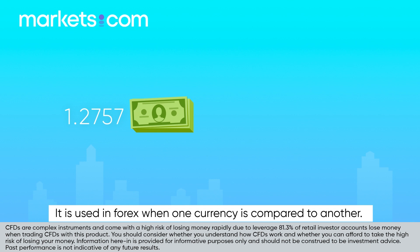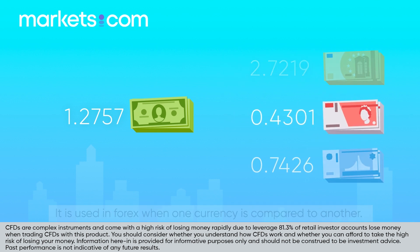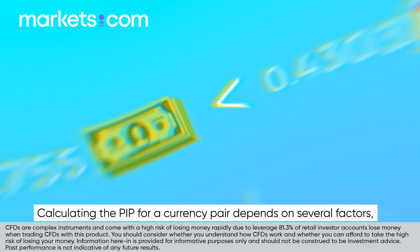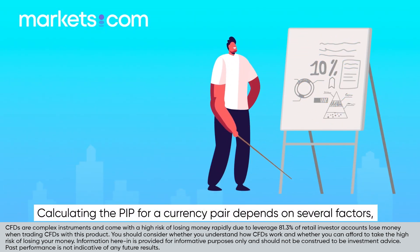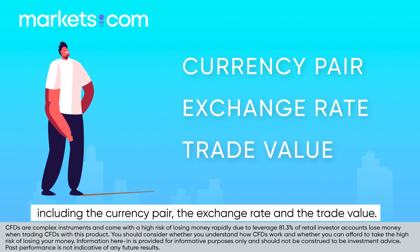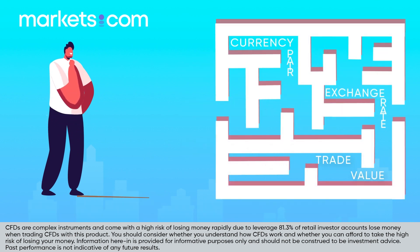It is used in forex when one currency is compared to another — for example, the US dollar and the British pound. Calculating the PIP for a currency pair depends on several factors, including the currency pair, the exchange rate, and the trade value.